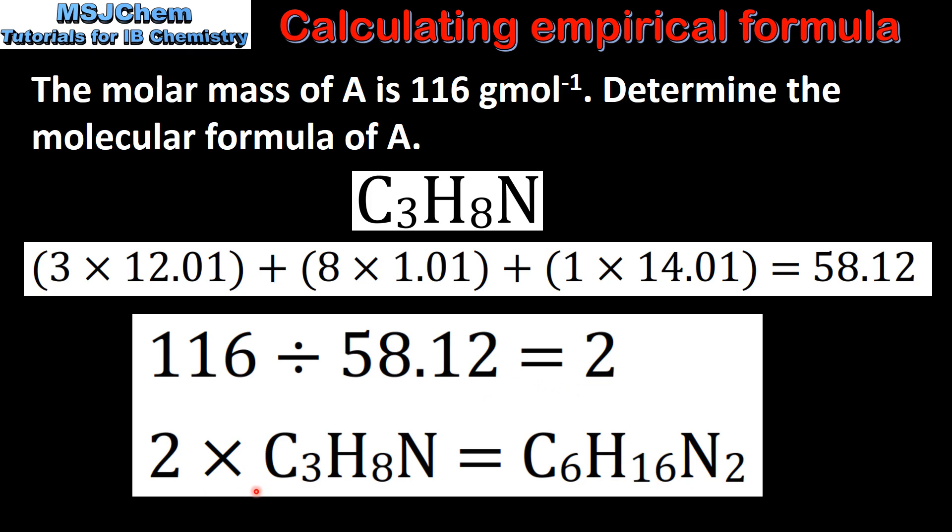And the final step is to multiply all the atoms in the empirical formula by 2. So that's 2 times 3 for the carbon, 2 times 8 for the hydrogen, and 2 times 1 for the nitrogen. And this gives us a molecular formula of C6H16N2.